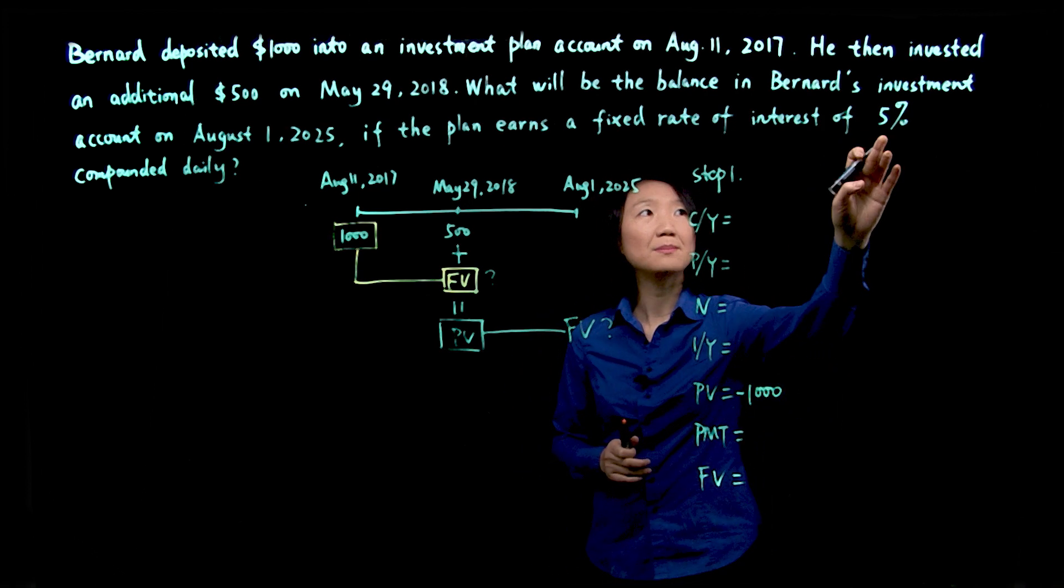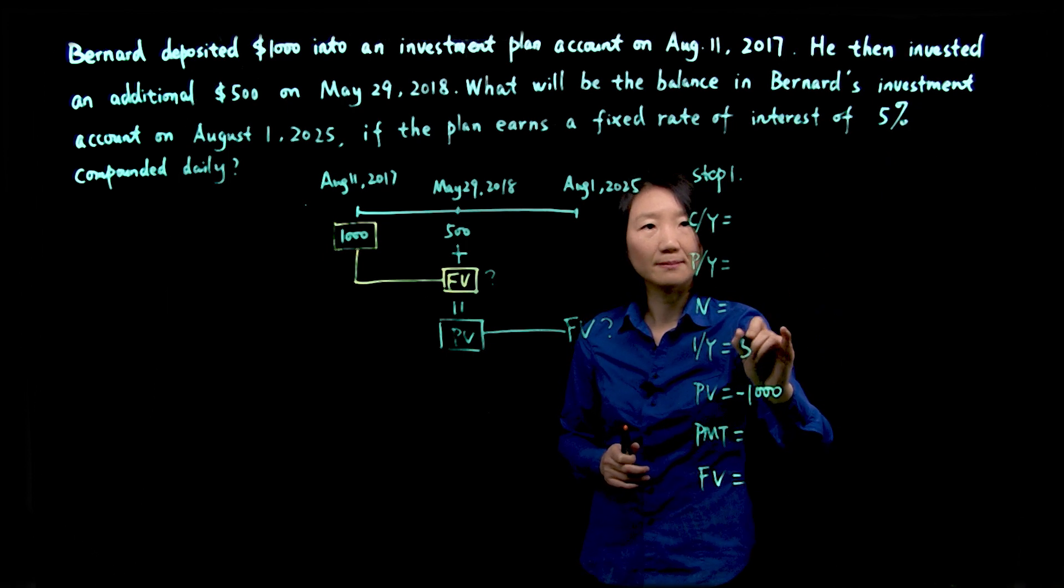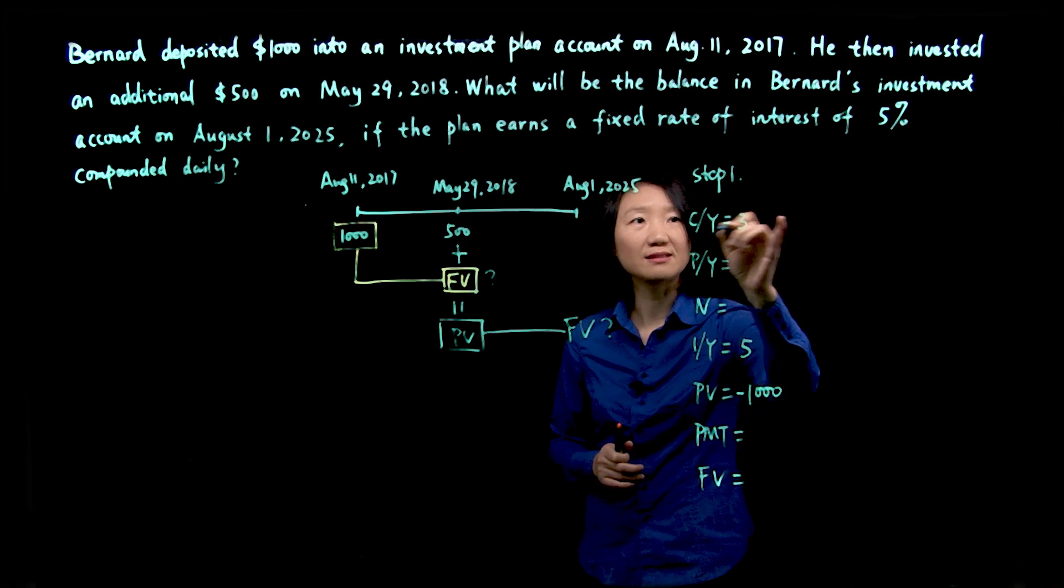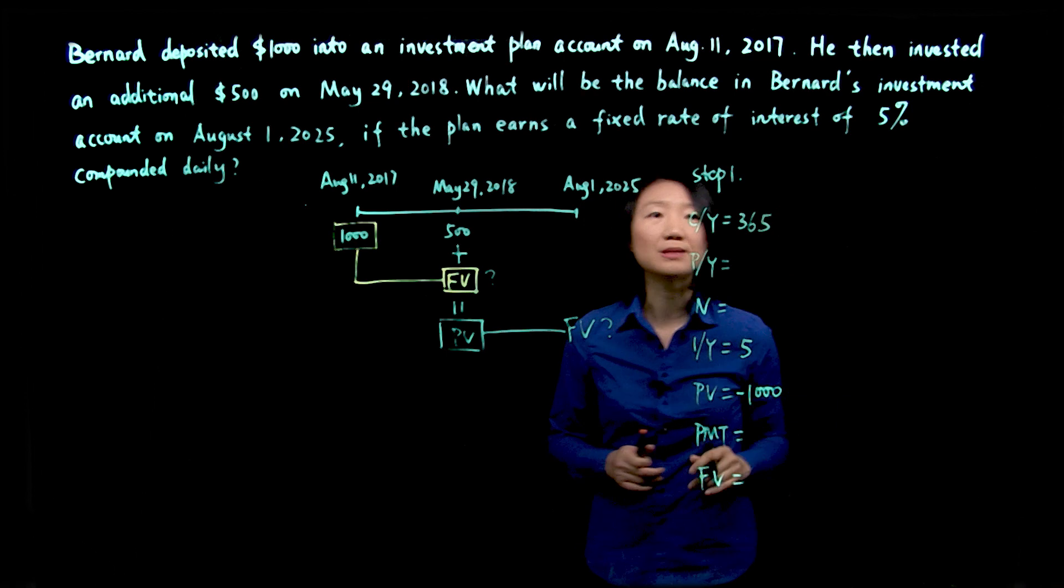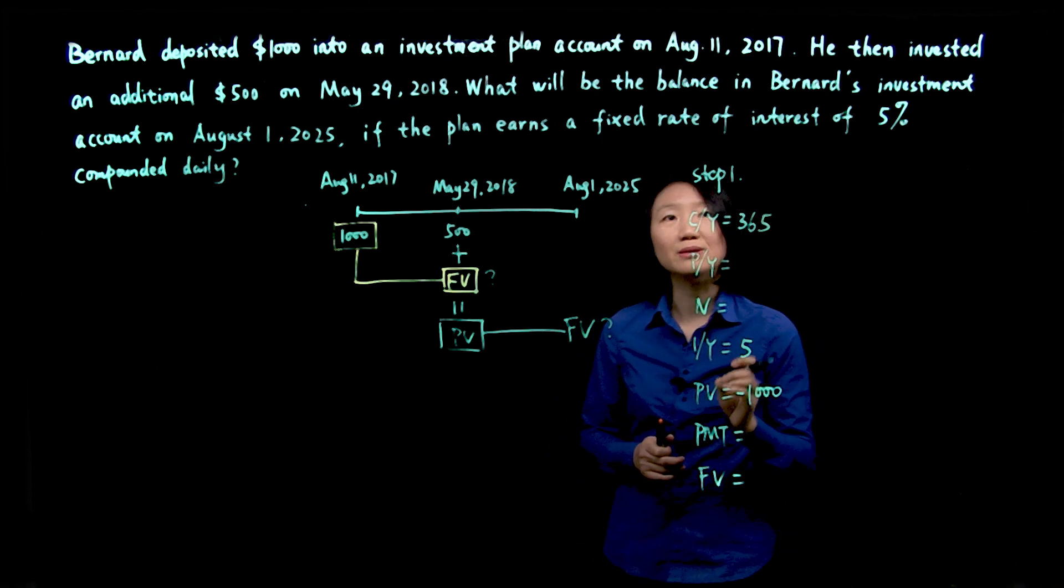Interest rate is 5% compounded daily. Daily means CY would be 365, 365 compounding periods every year.